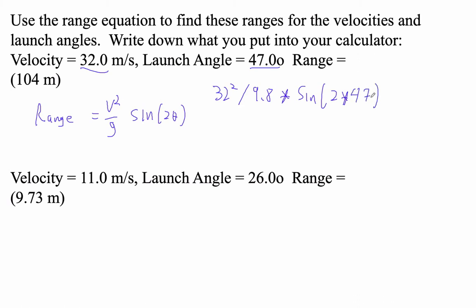Let's see what happens here. 32 squared divided by 9.8 times sine two times 47. Don't forget to end the parentheses. I'm getting that it's 104.235 meters.